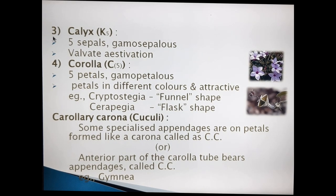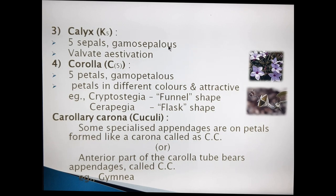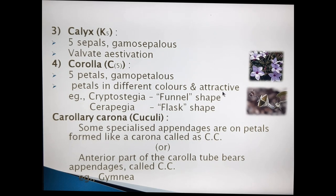Going to the floral characters in detail. First character of the floral parts is Calyx, indicated as K. In Calyx, five sepals are present. These five sepals are gamosepalous with valvate aestivation. Next, Corolla: five petals. These five petals are gamopetalous. These petals are in different colors and very attractive. In the Asclepiadaceae family, most flowers are very attractive with beautiful colors, attracting insects for pollination easily.